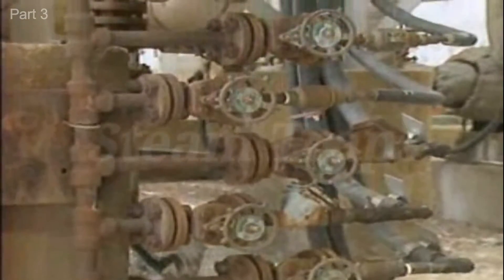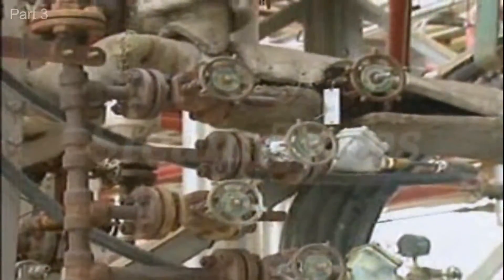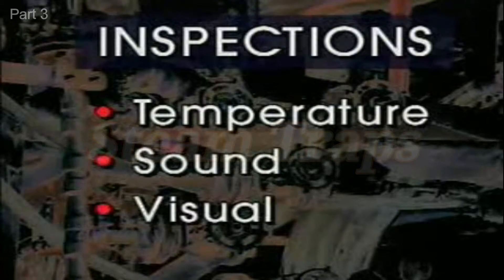After a steam trap station has been surveyed or inspected, the next step is to survey the individual traps in the station. Trap problems aren't always easy to detect, so a combination of different inspection methods may be used. Typically, a thorough trap survey combines information obtained by performing three types of inspections: temperature, sound, and visual.